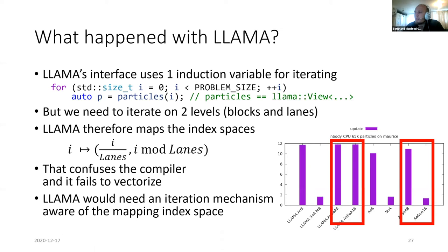This gives us a clear to-do for LLAMA: it needs a different iteration mechanism. Just giving the user an index-based interface where they say 'give me particle 0, 1, 2...' is not powerful enough for the compiler to understand what's happening and vectorize. The looping structure needs to change and improve in LLAMA — it's really a problem of the iteration model.